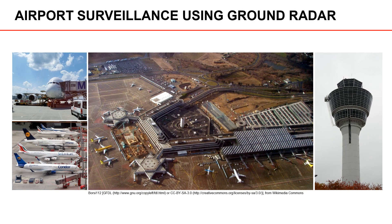A modern example of where it is important to keep track of moving objects is airport surveillance. The control tower is responsible for the planes that take off and land, and also for the planes that are on the ground. In addition, there are many other types of objects that move around at an airport, such as vehicles that fill the planes with fuel or bring luggage to the planes. To avoid collisions at the airport, it is important to keep track of all these different objects.